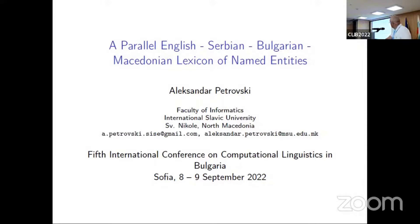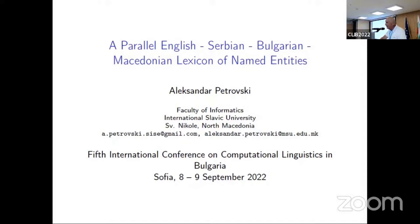This is the last talk before the break of this section, presented by Alexander Petrovsky. It will be on a parallel English-Serbian-Bulgarian-Macedonian lexicon of named entities — specifically, named entities extracted from Wikipedia. So we are talking about a multilingual parallel lexicon of named entities extracted from Wikipedia.